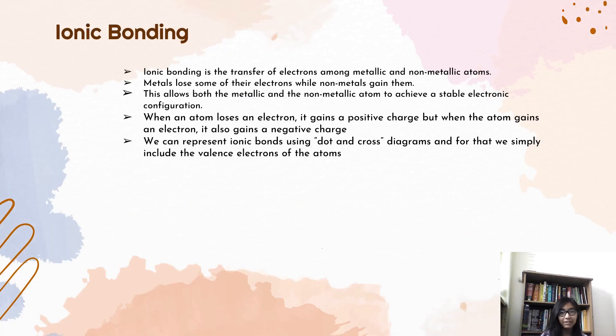Ionic Bonding is a transfer of electrons among the metallic and non-metallic atoms. In this process, the metals transfer their electrons to the non-metals. Meaning, the metals are the ones that lose some of their electrons while the non-metals are the ones that gain them. This allows both the metal and the non-metals to achieve a stable electronic configuration. When an atom loses an electron, it gains a positive charge. But when the atom gains an electron, it gains a negative charge. We can represent the Ionic Bonds using the dot and cross diagram in which we simply include the valence electrons of the atoms.